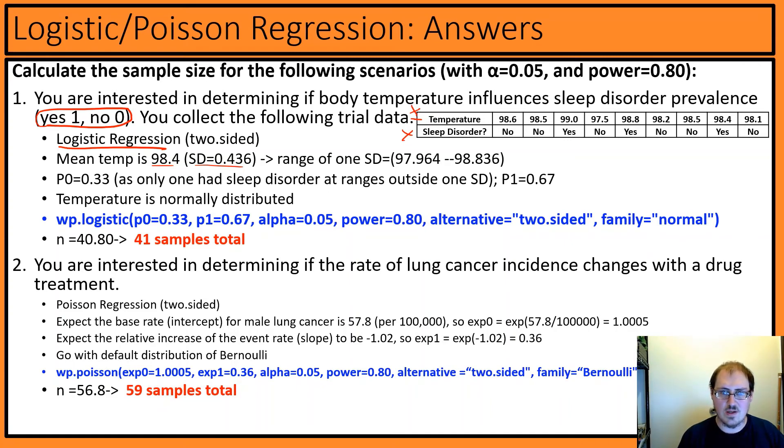We have mean temperature and standard deviation - this is our range. One standard deviation goes from 97 to 98 point something. Our p0 under the null: within the standard range, we only had one sleep disorder with yes - this one. So there's only a third probability of having this sleep disorder within this standard range, whereas the other two fell outside - that's our p1. We can plug these in, and since we just say 'influence,' we're using two-sided normal distribution, which gives us 41 samples total.